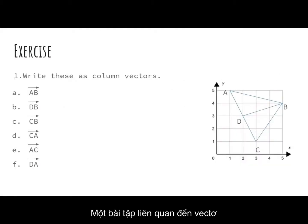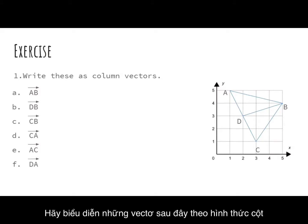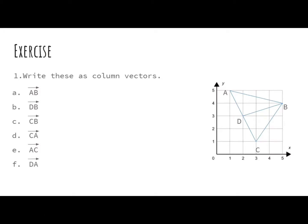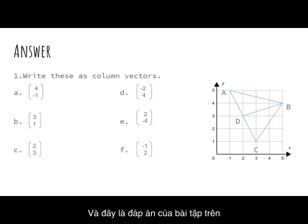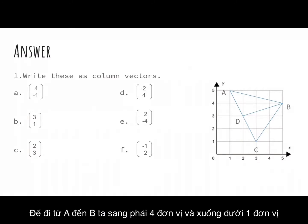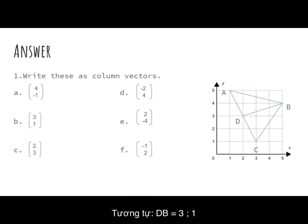Here is an exercise about vectors. Write these as column vectors: AB, DB, CB, CA, CD, and DA. Here is the answer: AB equals (4, −1), because to get from A to B you have to move 4 right and 1 downwards. DB equals (3, 1). CB equals (2, 3). CA equals (−2, 4). AC equals (2, −4). And DA equals (−1, 2).